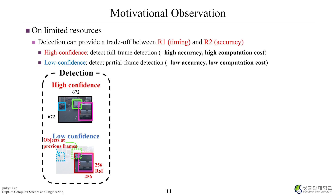By addressing the limited resources, we consider two detection approaches. Detection can provide a trade-off between timing and accuracy. First is high confidence detection: detect the full frame, which results in high accuracy but high computational cost. The second option is low confidence object detection: it detects only a partial frame — the most important part, as studied by previous researchers — yielding lower accuracy but reduced computation cost and time.